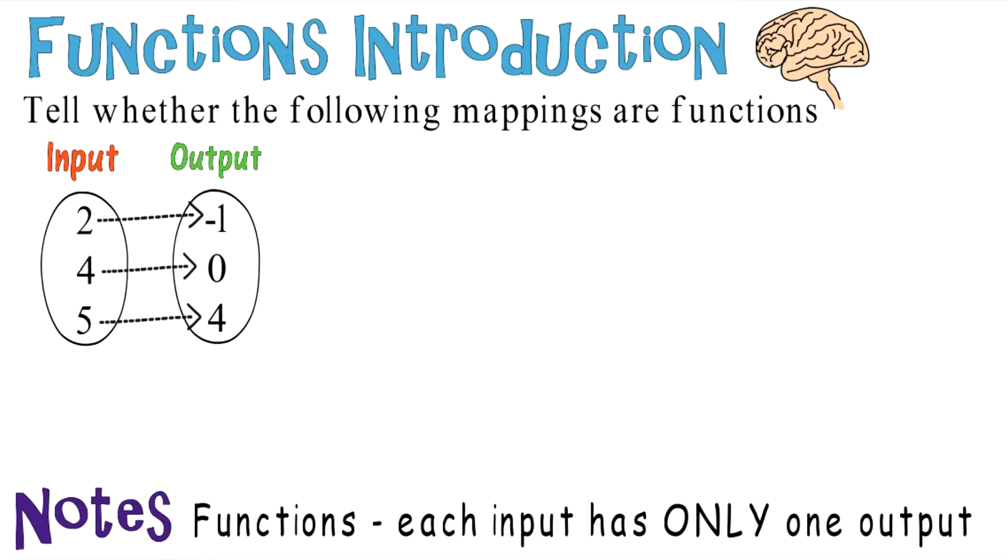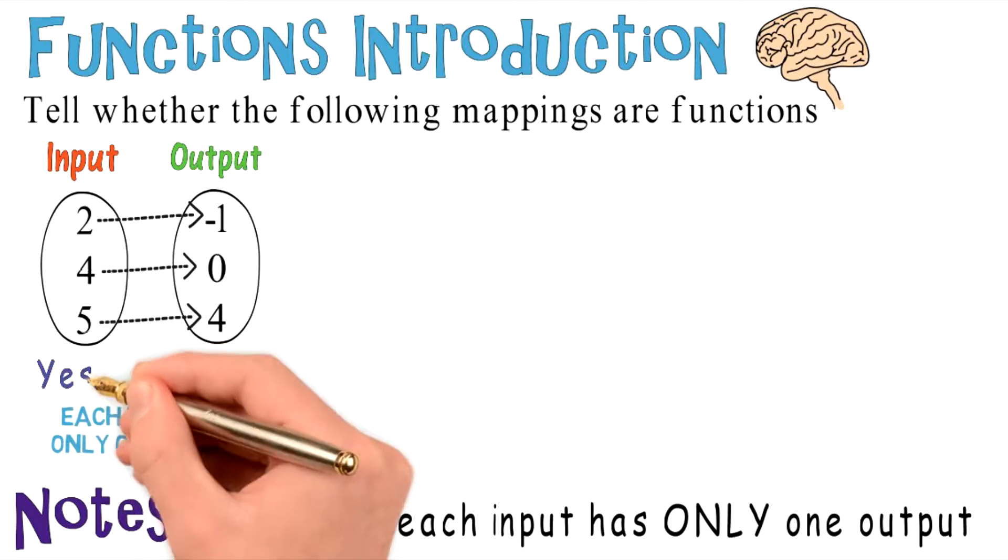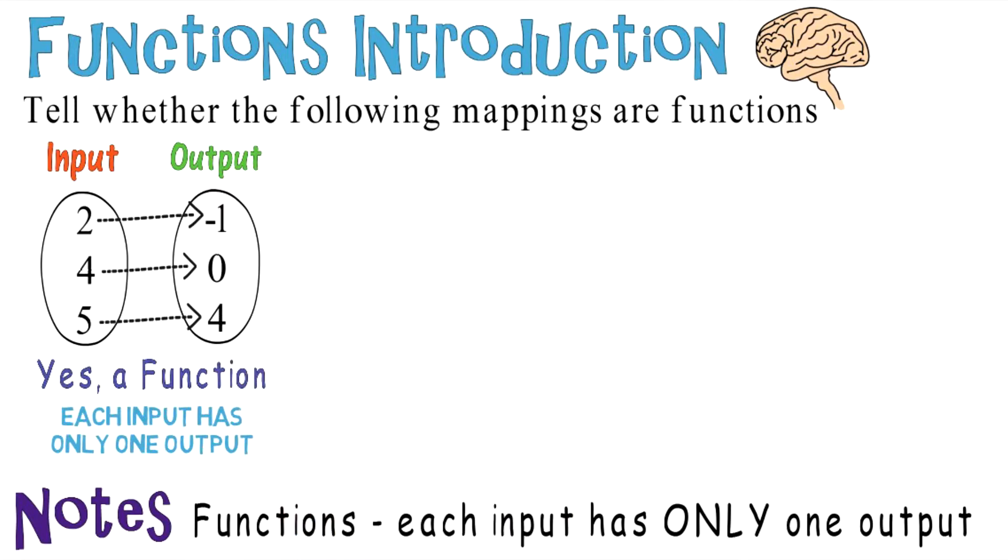Let's take a look at the first one. You see here that each input has only one output. 2 only goes to 1, 4 only goes to 0, and 5 only goes to 4. So you can mark down yes, this is a function.